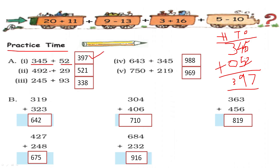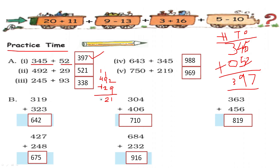Second question: 492 plus 29. 9 and 2 make 11 — 1 carry. 9 plus 1 is 10, plus 2 is 12 — write 2, carry 1. 4 plus 1 is 5. So 521 is the answer.